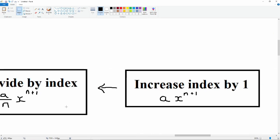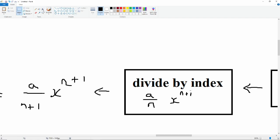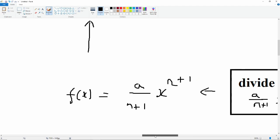Let me just correct that for you. Glad I spotted that. Okay, so that should be a over n plus 1, x to the power n plus 1, and that gets us back to our f of x.